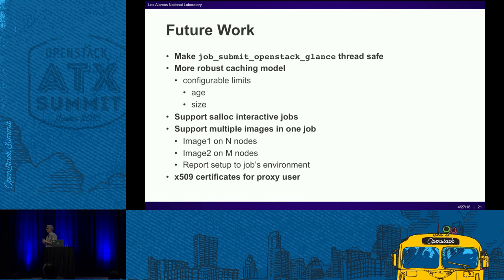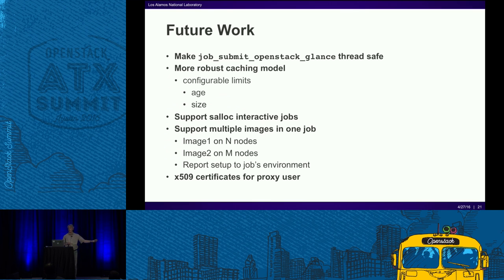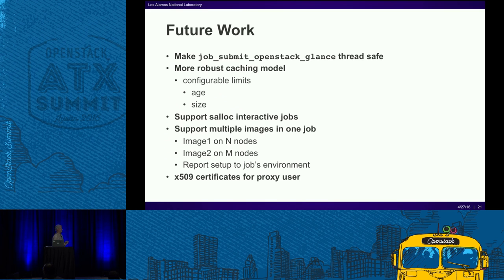Future work: this was about a two-week project and we're using it on a system that's not heavily utilized yet. I'm not thread-safe with my job submit plugin. The Slurm documentation warns you upfront — if your plugin takes more than three or four hundred milliseconds, you need to spawn a thread because the system will just fail and move on. My job submit plugin is not yet multi-threaded, though the SPANK side just runs inline and doesn't have that problem. I also need a more robust caching model. Right now I'll just keep putting images there until the disk fills up. We need configurable limits — age-based, size-based — and a FIFO mechanism to free up space before dropping another image.